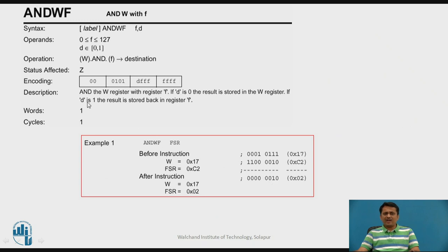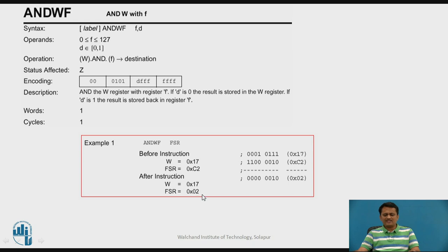Like addition, AND is a logical operation supported by PIC, performing bit-by-bit AND. Working register contents are ANDed with the file register and the result goes to the destination. The AND operation affects only the zero flag. For example, ANDWF FSR: working register 17 hex and FSR C2 ANDed bit by bit give result 02. Since D-bit is not mentioned, the default value of 1 stores the result in the file register.